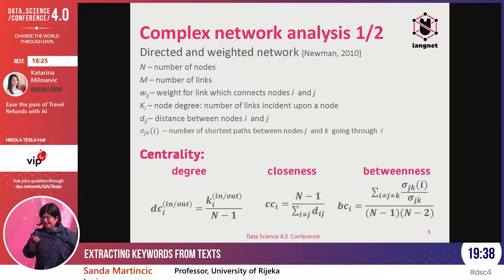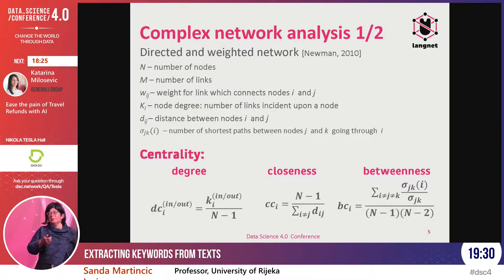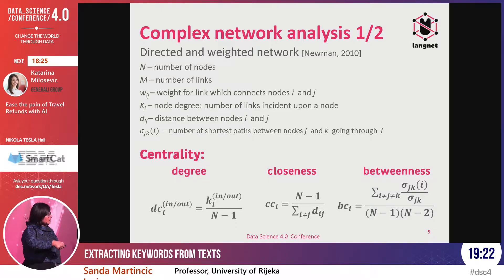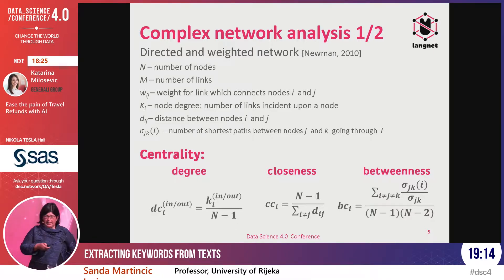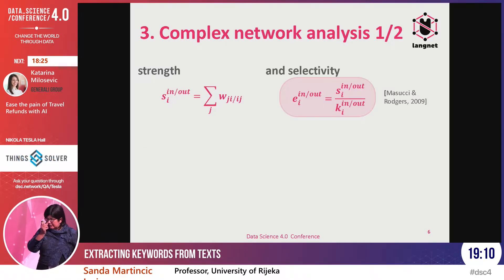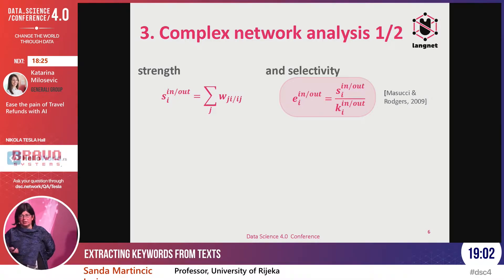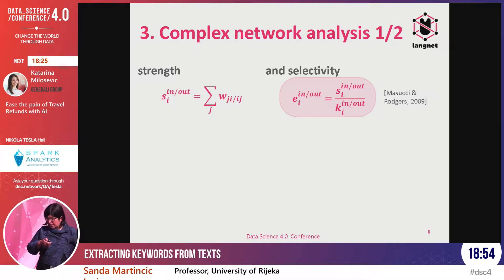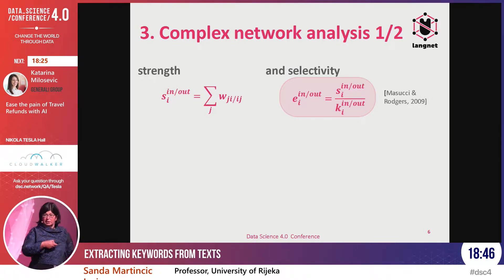For each node you can calculate the degree — simply how many neighbors are on the incoming or outgoing links. Closeness is how close a node is to other nodes in the network. Betweenness is how many paths between two nodes pass through that node. What we proposed is a selectivity measure for keyword extraction, originally proposed by Masucci and Rogers to differentiate between artificial and proper text. We saw interesting properties of this measure which can be used for keyword extraction.